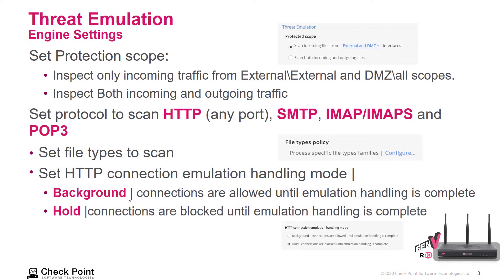The Threat Emulation Engine settings allow us to set the protection scope to either all traffic or just incoming traffic from DMZ or external. We can set the protocol to scan HTTP over any ports, SMTP, IMAP, IMAP Secure, and POP3. We can also configure which file types we want to scan.